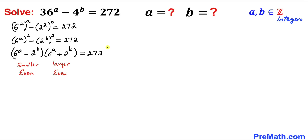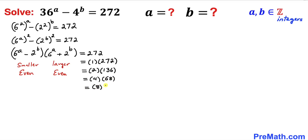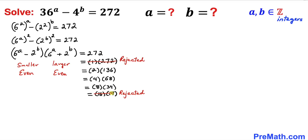Now let's focus on 272 on the right-hand side. The possible factor pairs are: 1×272, 2×136, 4×68, 8×34, and 16×17. Since both left-hand side factors must be even numbers, the pair 1×272 is impossible and 16×17 is impossible as well. So both of those possibilities are rejected.